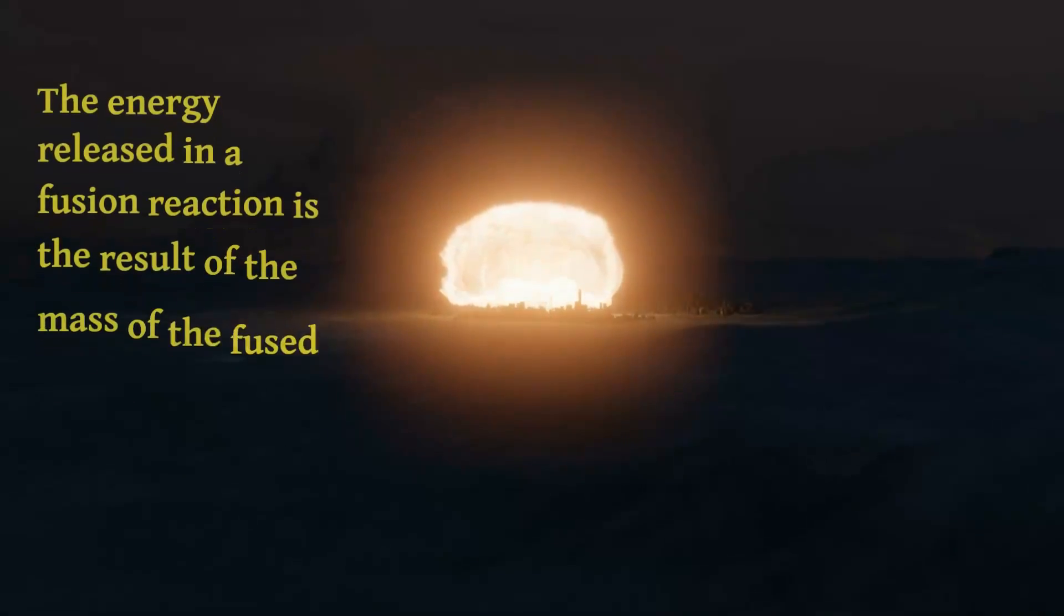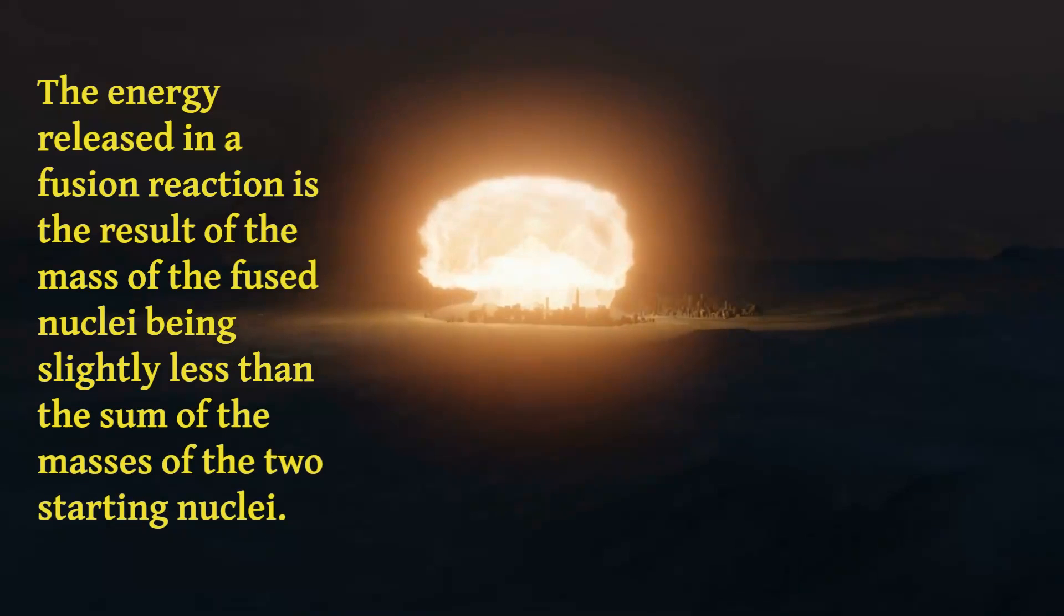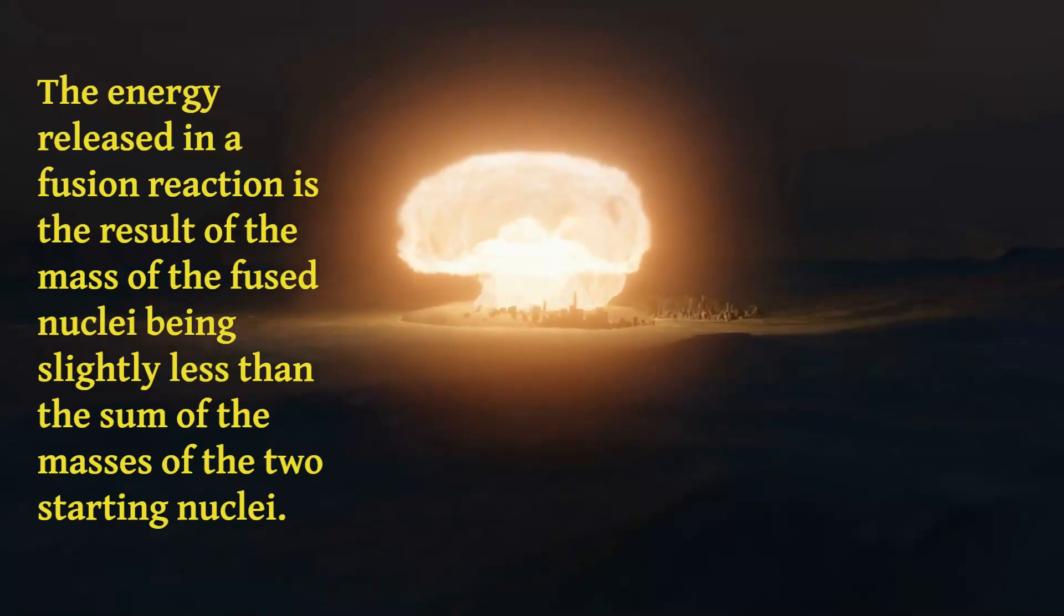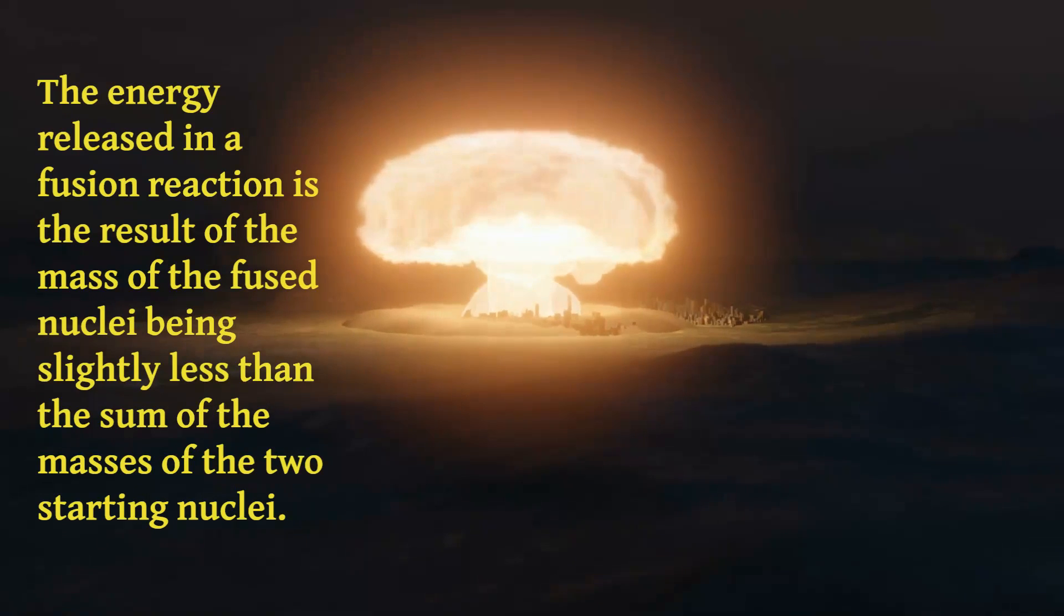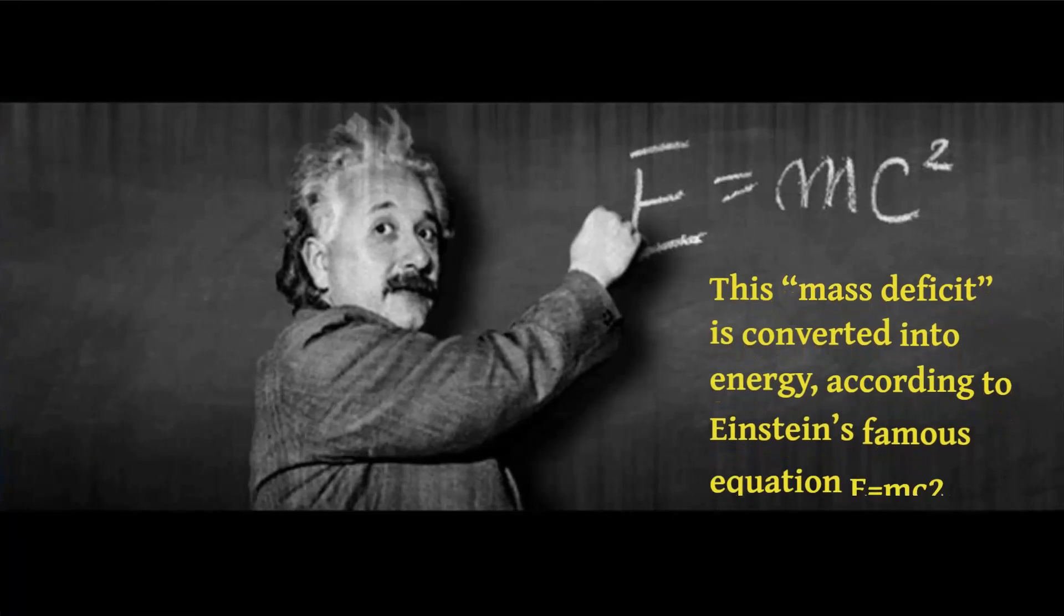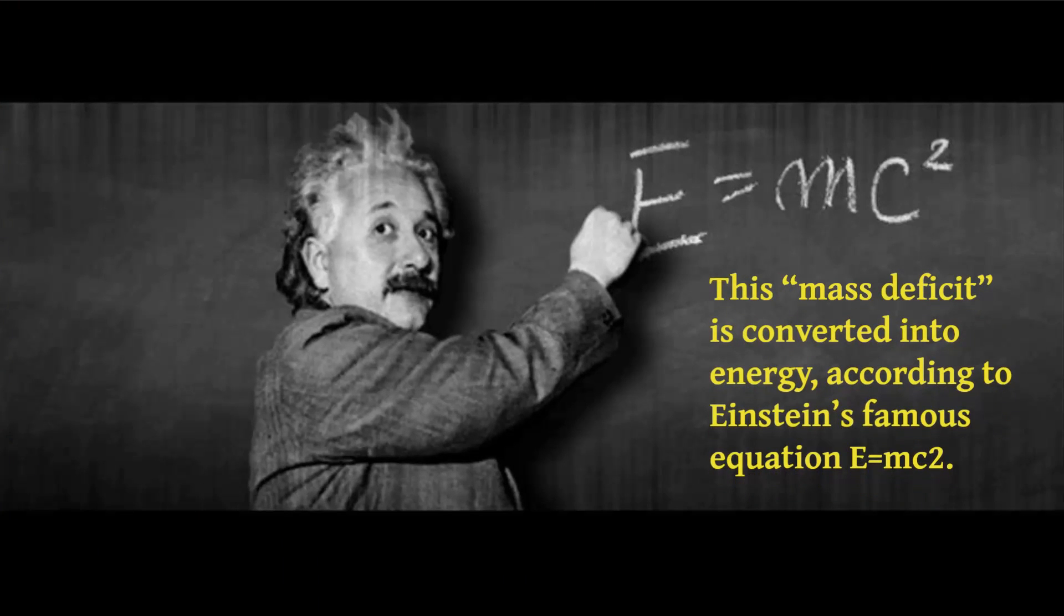The energy released in a fusion reaction is the result of the mass of the fused nuclei being slightly less than the sum of the masses of the two starting nuclei. This mass deficit is converted into energy, according to Einstein's famous equation E equals mc squared.